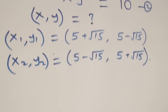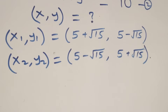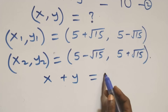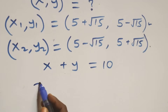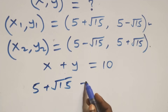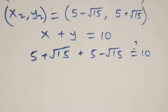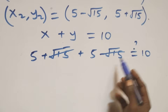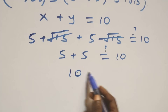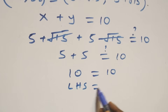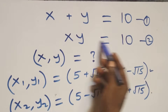Let's verify by substituting the first solution set into equation one, x plus y equals 10. We get (5 plus √15) plus (5 minus √15): the √15 terms cancel each other, leaving 5 plus 5, which equals 10. The left-hand side equals the right-hand side, so this solution satisfies equation one.